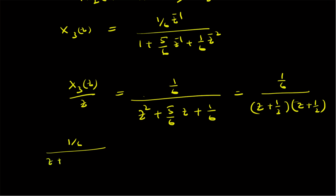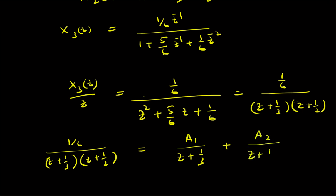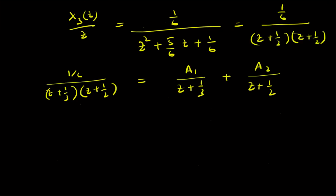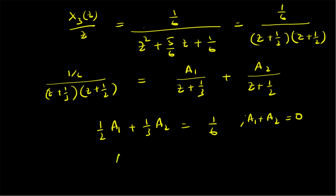We apply partial fractions: (1/6) divided by (z + 1/3)(z + 1/2) equals A₁/(z + 1/3) plus A₂/(z + 1/2). Comparing constants in the numerator: (1/2)A₁ + (1/3)A₂ = 1/6. Comparing coefficients of z: A₁ + A₂ = 0, so A₂ = −A₁. Substituting gives A₁·(1/2 − 1/3) = 1/6, which implies A₁ = 1.